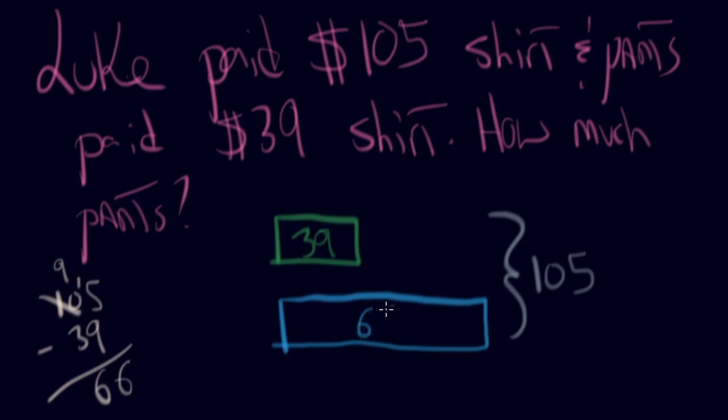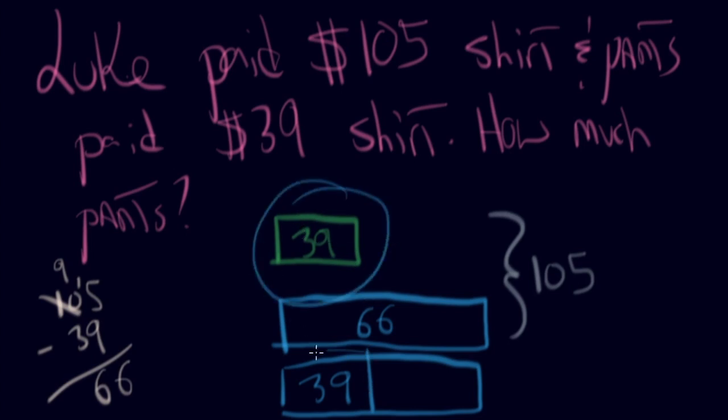So again, you could do $66 like this. But I do want to show you, because the obvious next question would be, is how much more was the pants compared to the shirt? So again, this $39 piece is the same size as this $39 piece. So how much more? If this was $66 in total, how do I get this piece right there? How do I do it? Well, then you'd have to go $66 and take away $39. Just like that. You can do some borrowing. You get $7 and $2. So it's $27 more. So $27 more than the shirt.